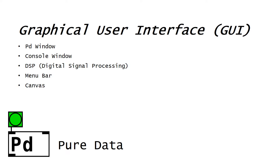The Graphical User Interface, also known as GUI, will cover the PD window, the console window, the DSP (digital signal processing), the menu bar, and the canvas. Welcome to this tutorial. Let's start off by launching Pure Data and dive into the graphical user interface.